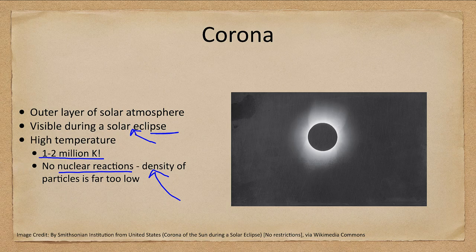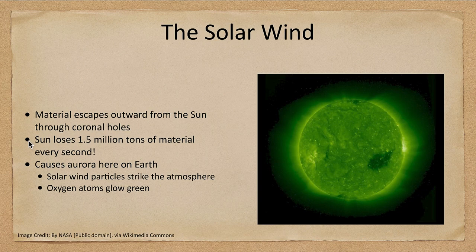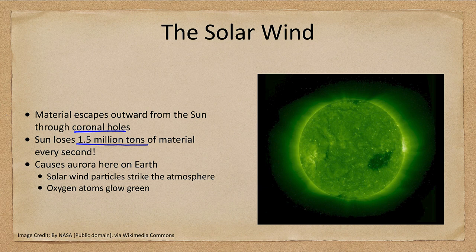Even if the corona were 10 or 15 million degrees like the center of our Sun, there are not enough particles close enough together to fuse. Out beyond the corona, we have the solar wind — material leaving the Sun through coronal holes. The Sun is losing one and a half million tons of material every single second, yet over its 10 billion year lifetime, given its tremendous mass, it will not even notice that amount of material being lost.